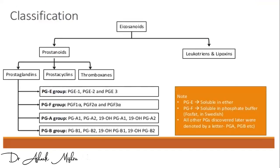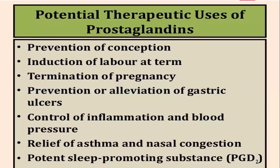Eicosanoids can be classified into prostanoids and leukotrienes and lipoxins. Under prostanoids, you have prostaglandins, prostacyclins, and thromboxanes. Under leukotrienes, you have LTA4, LTB4, LTC4, LTD4.